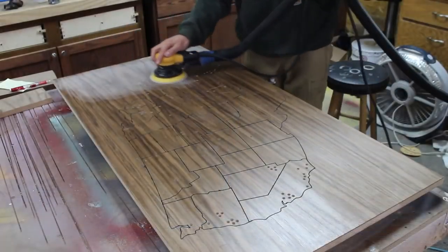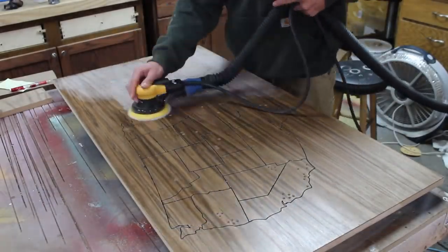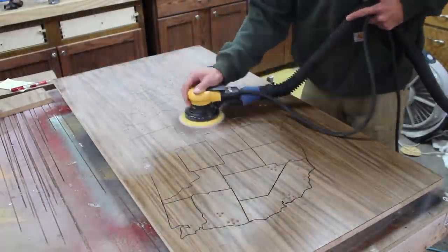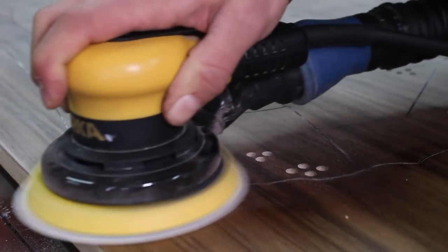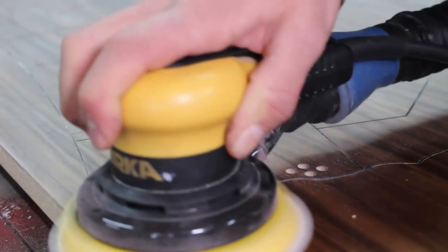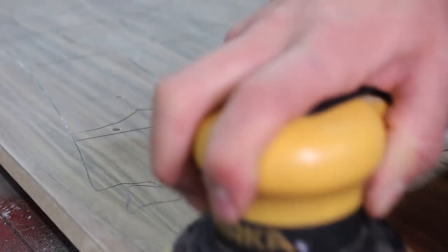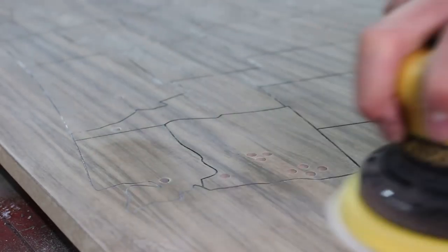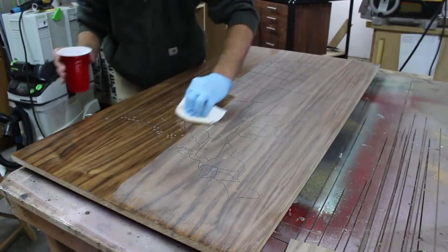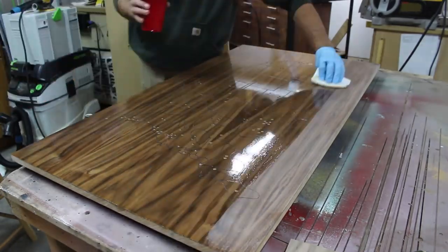Once the paint dries, I use a fine grit sandpaper and my random orbit sander to clean up any black paint that is on the surface. After vacuuming and using a tack cloth to get the fine dust off, I apply another two coats of lacquer.